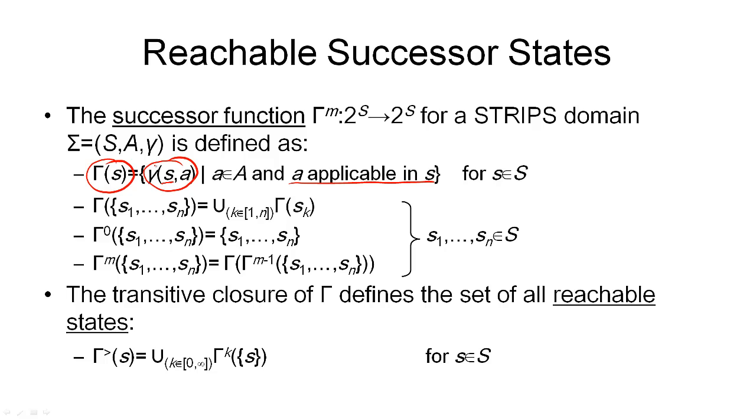We can extend this definition slightly. Suppose we are not in one state but we are in a set of states. We know that we are in one of these states and we want to define what states are reachable from any of these states.